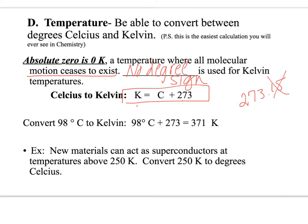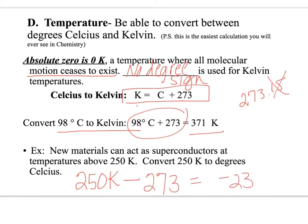So here, if I converted 98 degrees Celsius to Kelvin, I would simply add that 273 and get 371. And it says we want to convert 250 Kelvin to degrees Celsius. So we would say 250 Kelvin, and since we're going the opposite direction, we would subtract 273, and we would get negative 23 degrees Celsius.